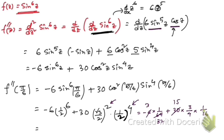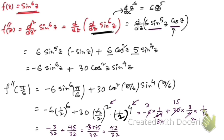Continuing the evaluation: −6/64 = −3/32, and 30 · 3/(4 · 16) = 90/64 = 45/32. So f''(π/6) = −3/32 + 45/32 = 42/32 = 21/16.